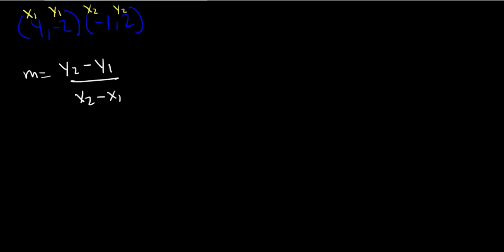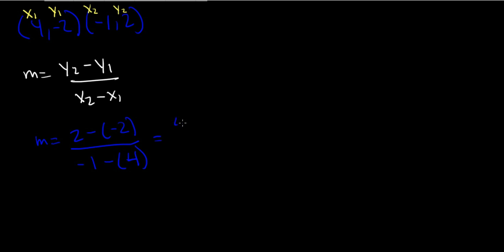Now we can plug in the numbers for the variables. So m equals 2 minus negative 2 over negative 1 minus 4. Because there are two negatives together, it becomes a plus, so we can do 2 plus 2, which equals 4. And then negative 1 minus 4 is going to equal negative 5. So the slope of the line is going to be negative 4 fifths.